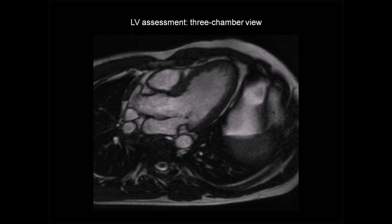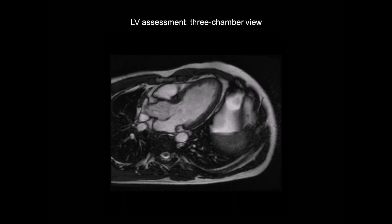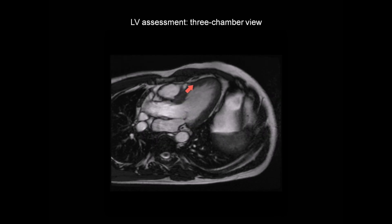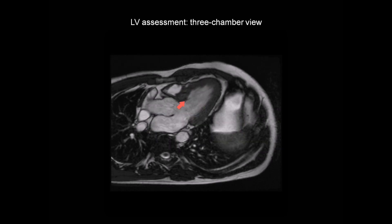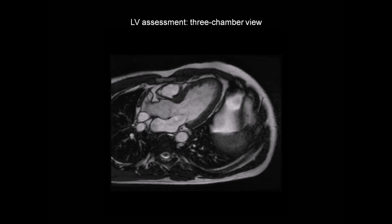Our next view is the three-chamber view. We have the left ventricle, mitral valve and left atrium, the aortic valve and aortic root, and we can just see the right ventricular outflow tract. Here we have the basal anteroseptal, mid-anteroseptal and apical septal segments, and the basal inferolateral, mid-inferolateral and apical lateral segments. The equivalent cine CMR image shows left ventricular segments with clear movement and thickening during systole, and regional wall motion is normal throughout.